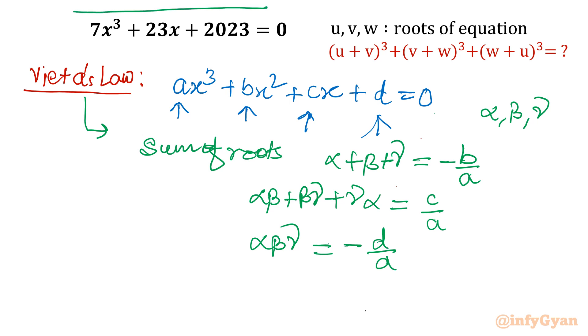For the given cubic equation, we can write sum of roots first. Let me write roots are u, v and w. This is given to us. So we will frame three equations, but mainly two equations are used. Equation number one: the sum of roots u + v + w. That would be equal to, x² term is not there, so we can write this as 0x². So this value will be 0. Sum of roots will be 0 because b is 0.